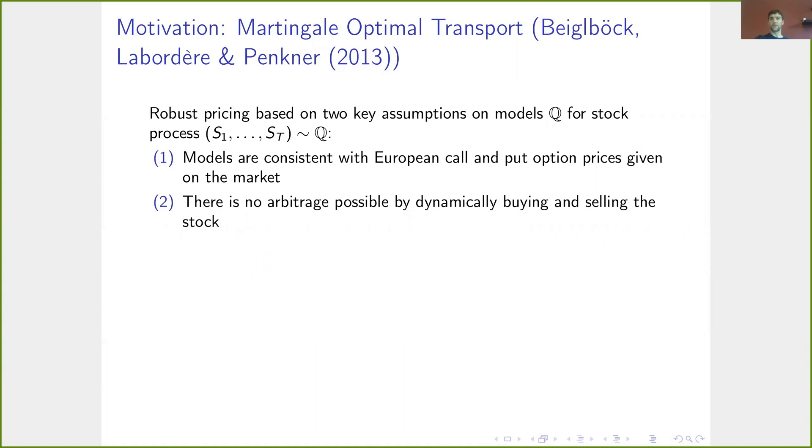One example of such a robust pricing approach is the martingale optimal transport problem. Here, one makes two key assumptions for the risk-neutral distribution Q of a stock process S_1 up to S_T. First is that models are consistent with European call and put prices given on the market, and the second is that there's no arbitrage by dynamically buying and selling the stock.